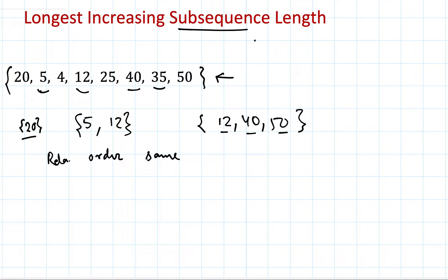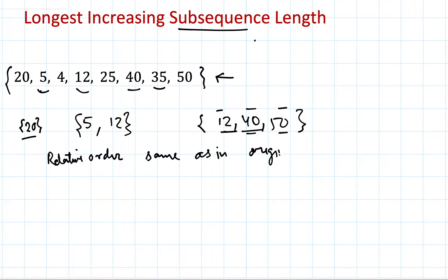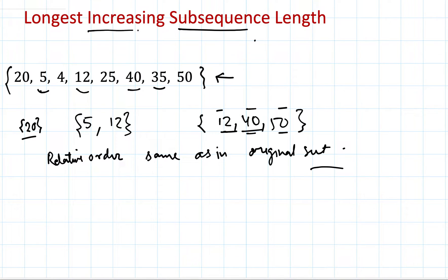Elements within a subsequence are in the same relative order as they were in the original array. This is the definition of a subsequence — we may pick one or more, or even the entire array. Now, the additional condition is that it should be increasing.